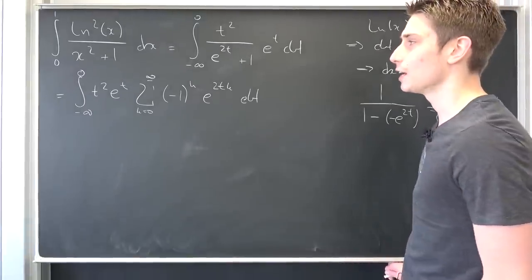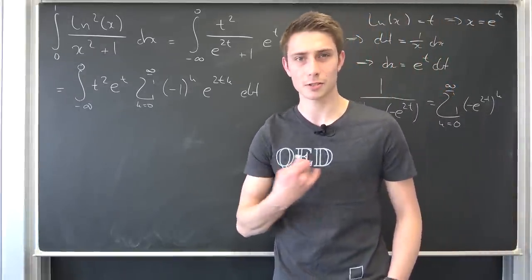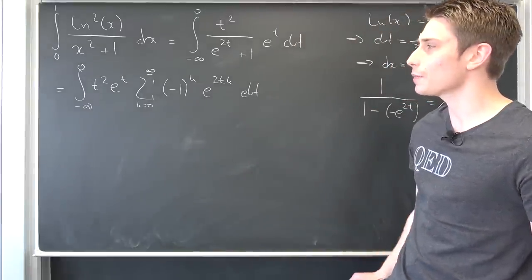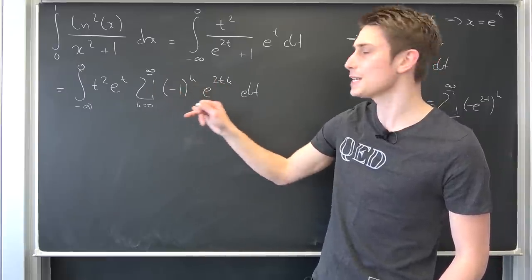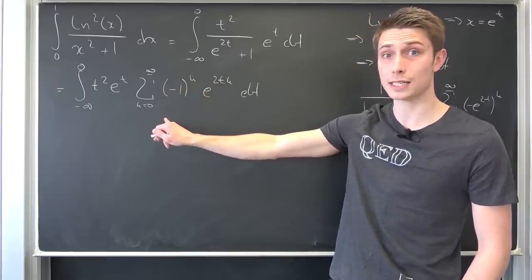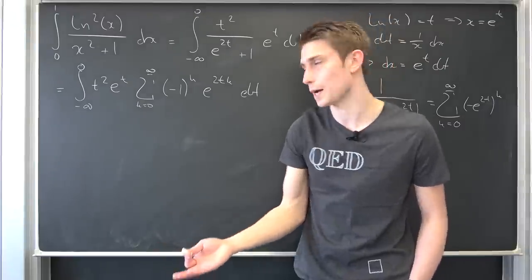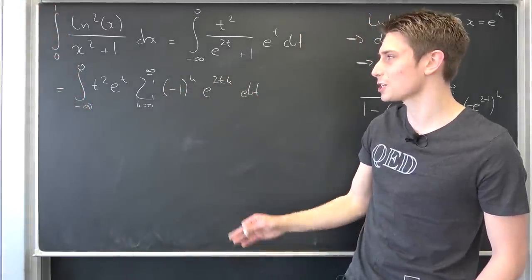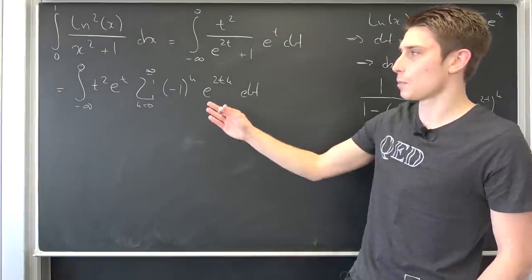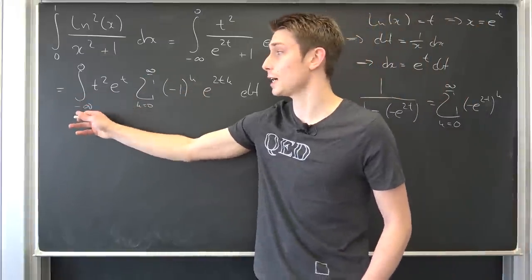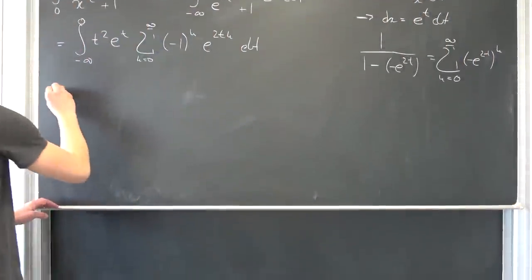Now we have to do some justifying. You can probably use the dominated convergence theorem to find a little dominator, an upper bound for those partial sums right here that is going to dominate this integral. Or you can just check for uniform convergence. It's a series of exponential functions and this should work out. So it's probably justified to interchange the infinite summation and this limit right here, an integral.